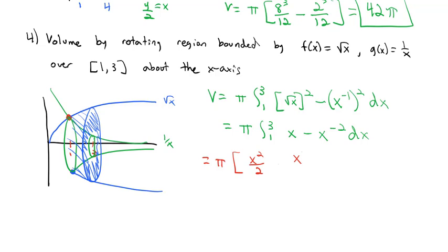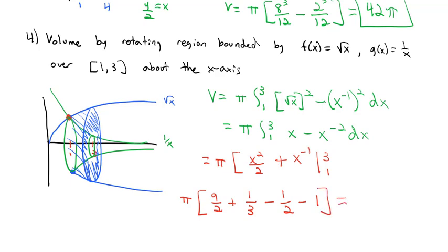We take the antiderivative: π times [x²/2 + x⁻¹] from 1 to 3. Plugging in 3: 9/2 + 1/3. Plugging in 1: 1/2 − 1. Computing the result gives 10π/3 cubic units — the volume of the shape obtained by rotating the region around the x-axis after subtracting out the hole in the middle.